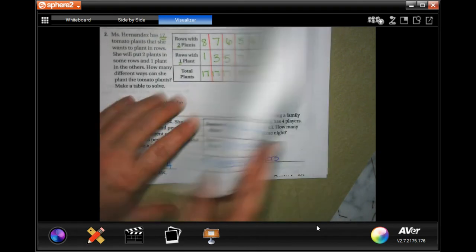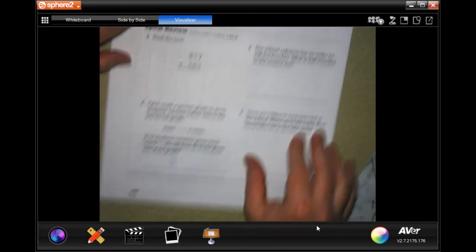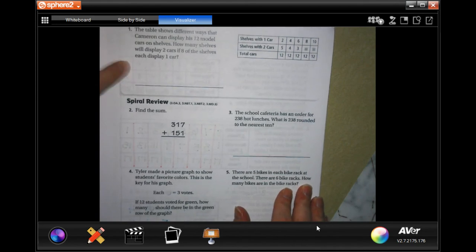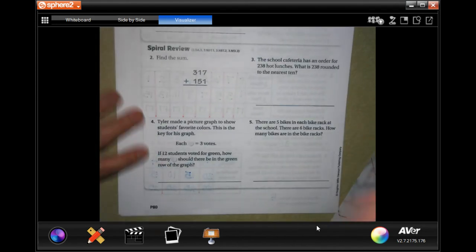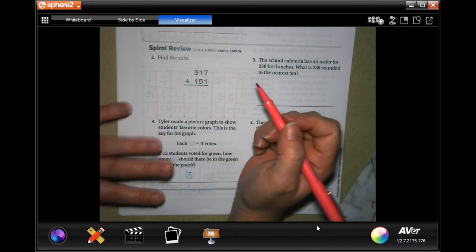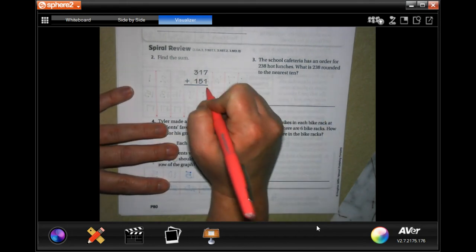We're going to go on to the back where you guys are going to do a lesson check just like always. Do your best, it's just one of them today. We're going to go down and do the spiral review. It says to find the sum, so all we're doing is adding. Seven plus one is eight, one plus five is six, three plus one is four. Done.